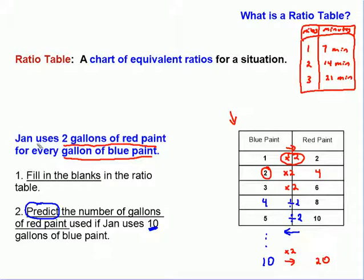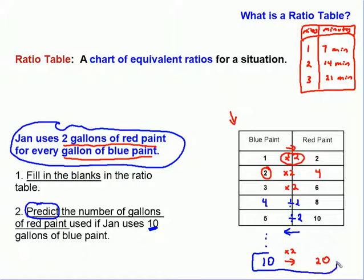Well, let's look back at our original statement. Jan uses 2 gallons of red paint for every 1 gallon of blue paint. In fact, this does predict it quite nicely. 10 gallons of blue paint will give us, will require 20 gallons of red paint.